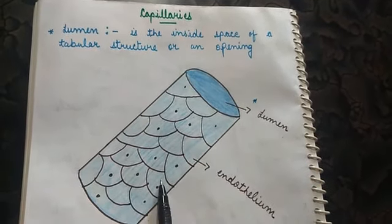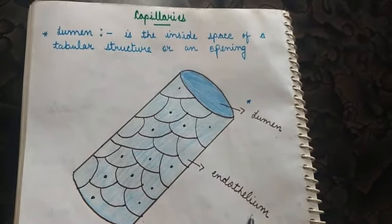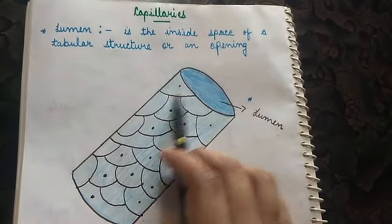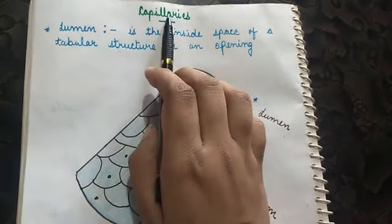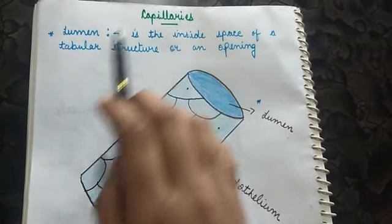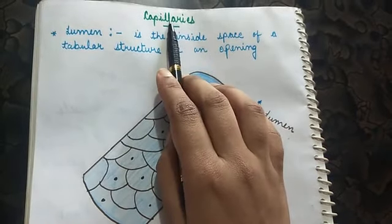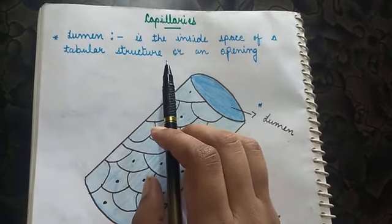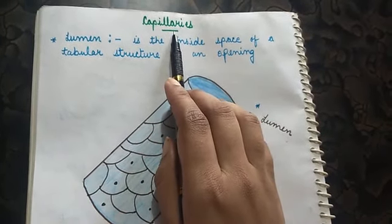The other thing that we can see in this structure is the endothelium. So this is the structure of capillaries. Capillaries connect arteries and veins.